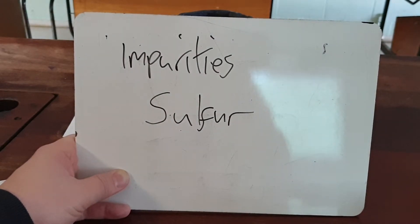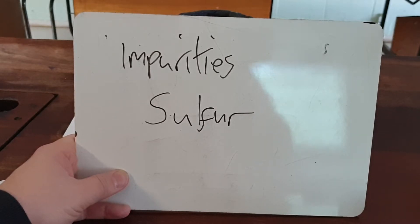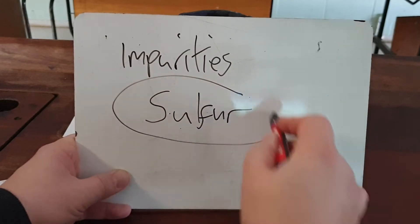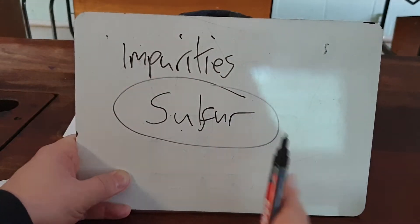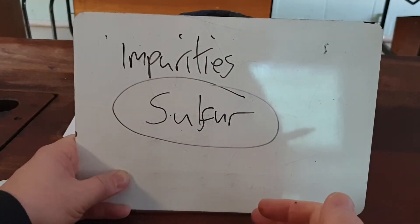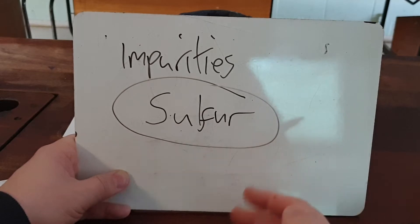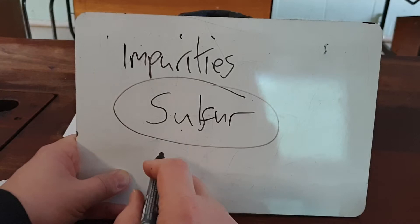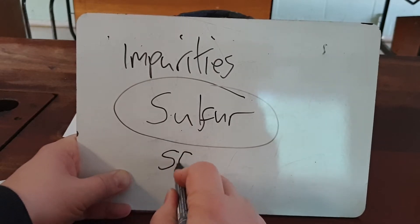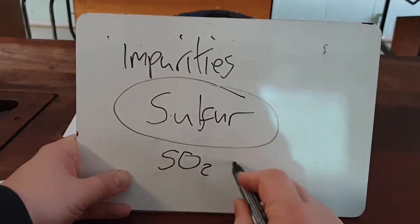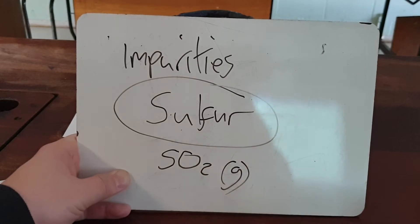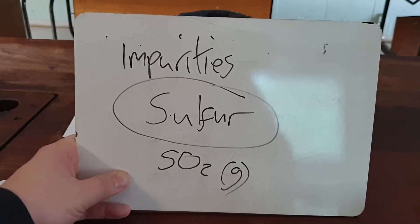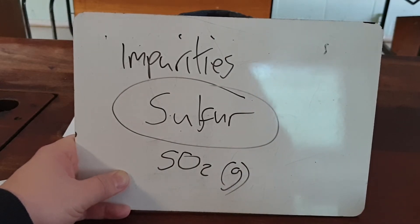When you combust hydrocarbons — remember, combustion is when you're reacting them with oxygen — if they have sulfur in them as an impurity, you've got sulfur and lots of oxygen from the combustion, plus heat. That results in sulfur dioxide, SO2, which is a gas. I'll show you how that can lead to acid rain.